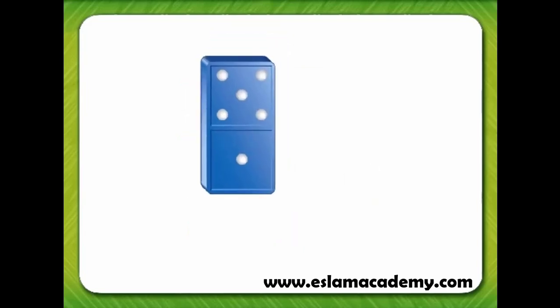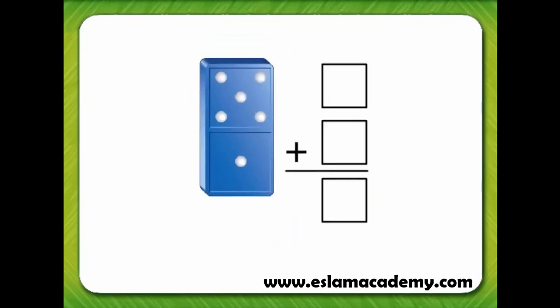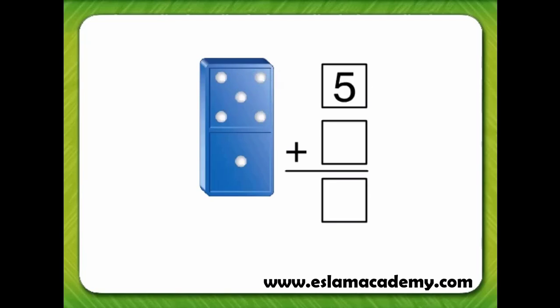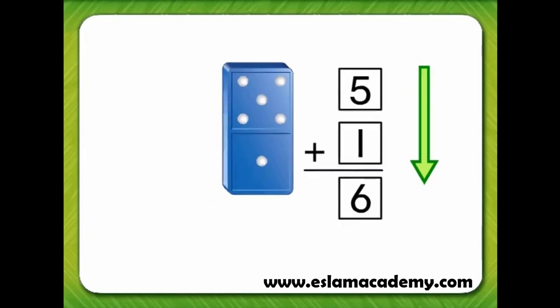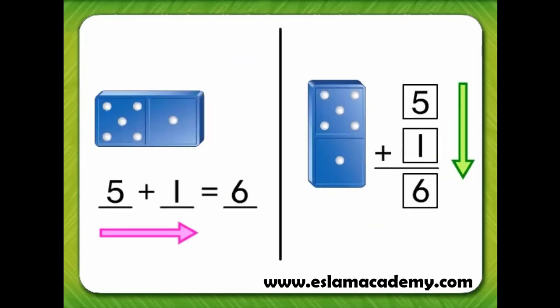We'll turn the domino so that the top is the first addend. How many dots are on the top of the domino? One, two, three, four, five. How many dots are on the bottom of the domino? One. If we add down, what is the sum of the dots on the domino? Six. So, when we add five plus one across, the sum is six. And when we add five plus one down, the sum is the same — six.